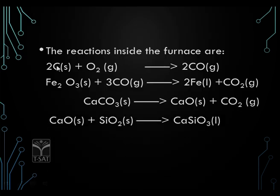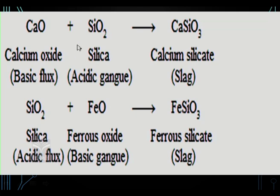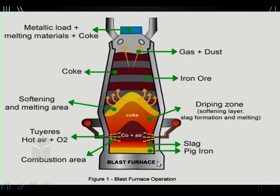In the blast furnace, carbon reacts with oxygen to form carbon dioxide; iron oxide reacts with carbon monoxide to form iron along with carbon dioxide. Calcium carbonate is added, which decomposes to calcium oxide and carbon dioxide; calcium oxide then combines with silica to form calcium silicate. Calcium oxide is the basic flux — it combines with acidic gang (silica) to form calcium silicate. Silica combining with iron oxide forms ferrous silicate, a slag which is removed from the blast furnace. In this way pure iron gets collected in molten form.